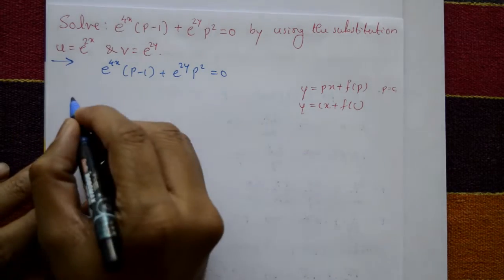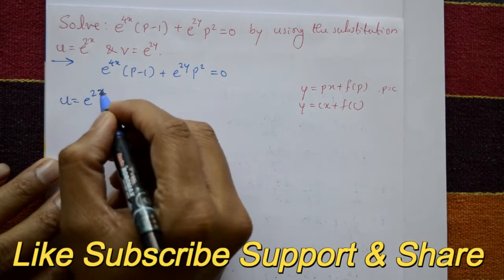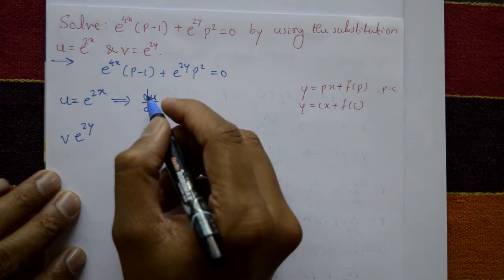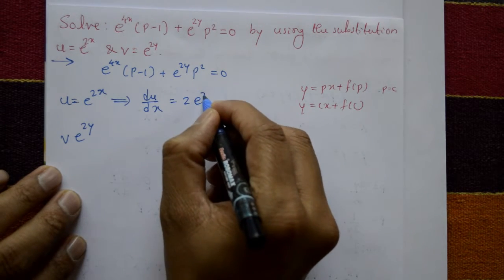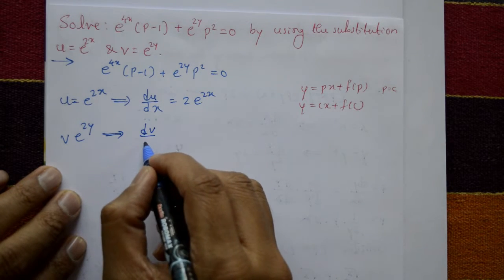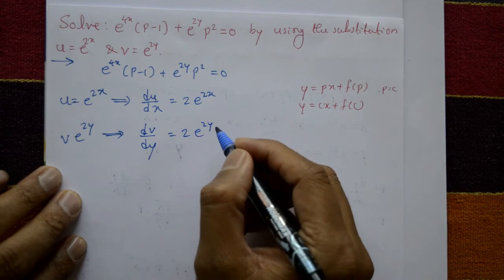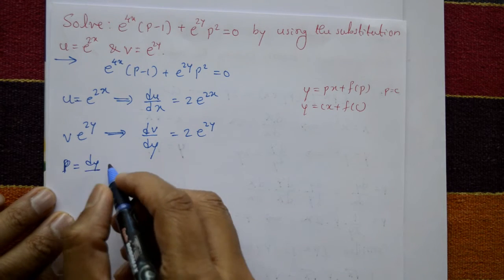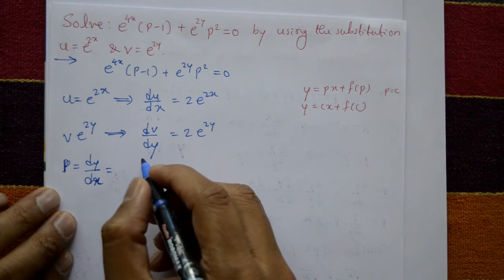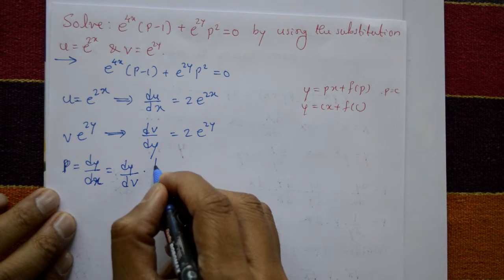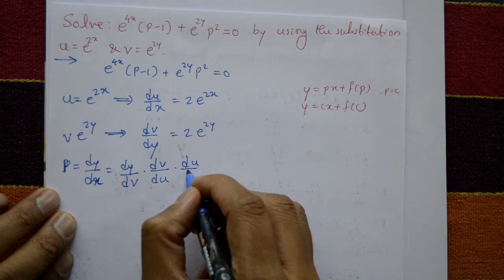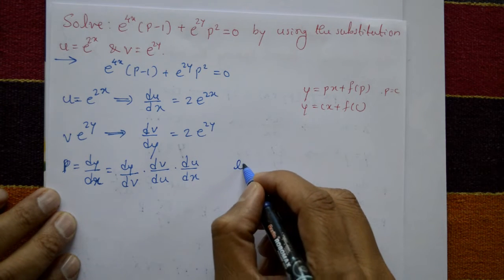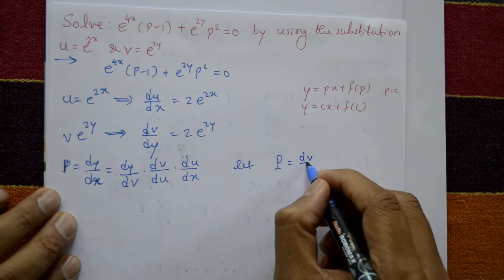By substitution, u equal to e raised to 2x and v equal to e raised to 2y. Now differentiate u with respect to x: du/dx equals 2 into e raised to 2x. Differentiate v with respect to y: dv/dy equals 2 into e raised to 2y. Now small p is dy/dx, which we write as dy/dv into dv/du into du/dx. Let capital P equal dv/du.